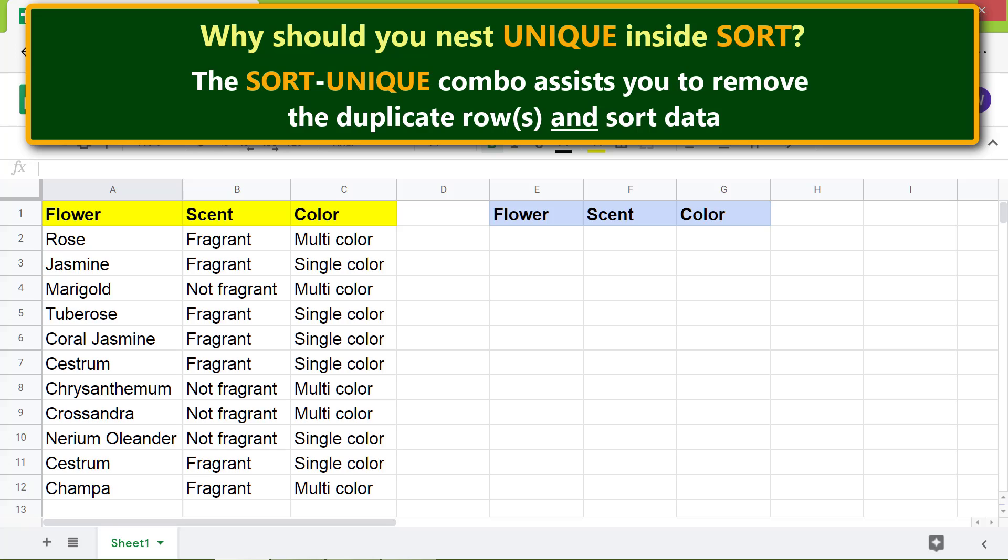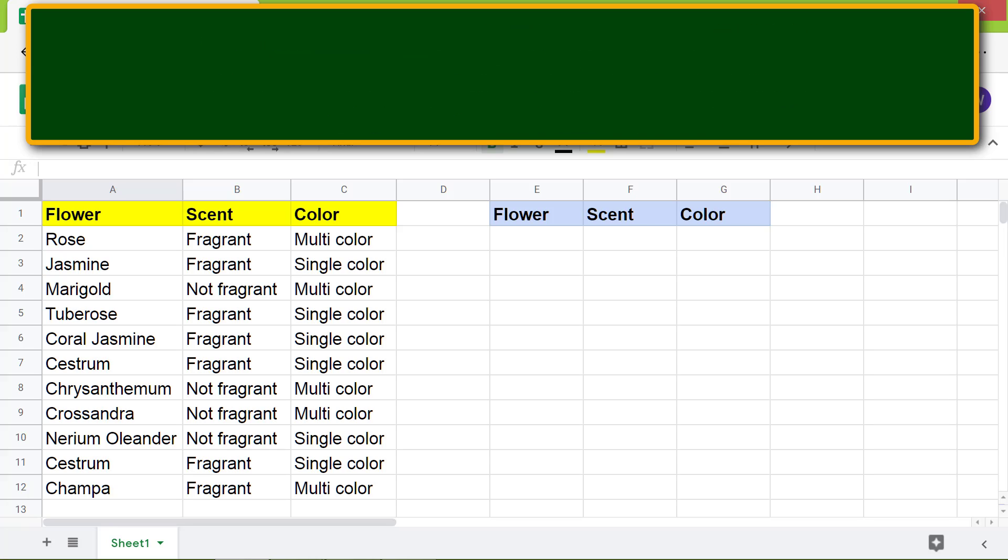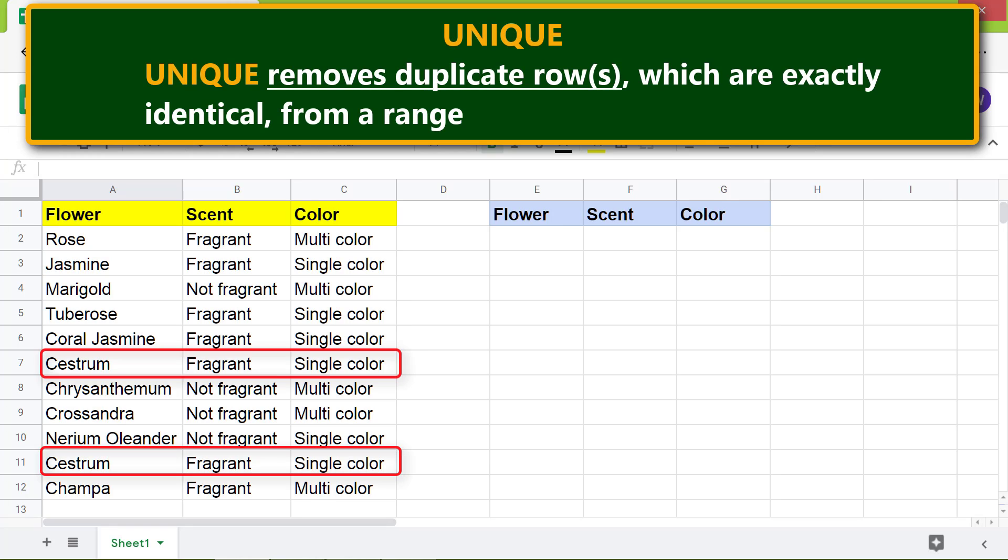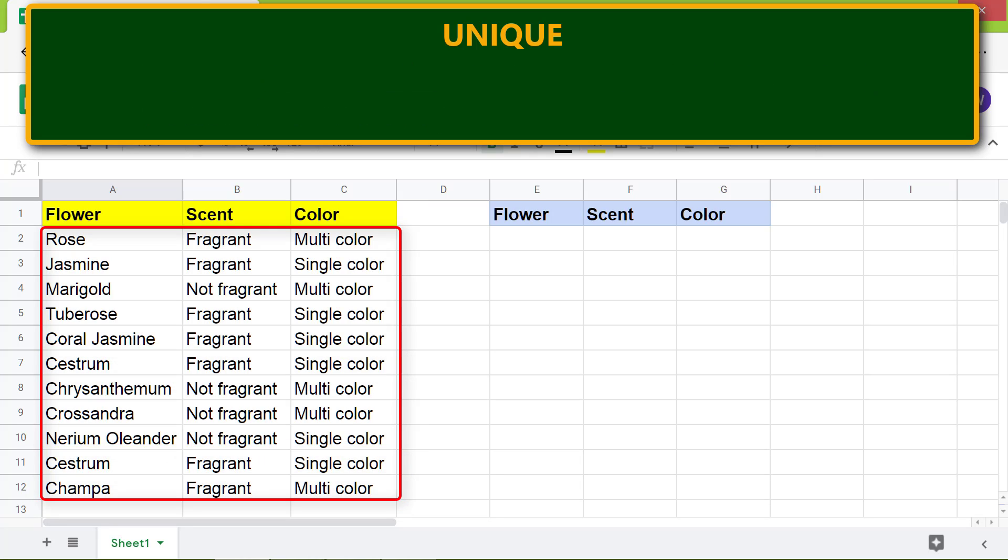Here's a quick introduction to UNIQUE. UNIQUE removes duplicate rows which are exactly identical from a range. Here's the format of the UNIQUE function. Here's the brief information about SORT.